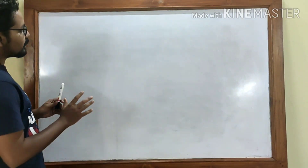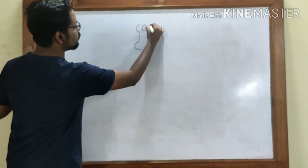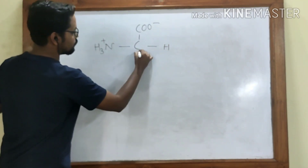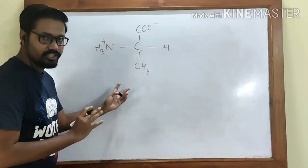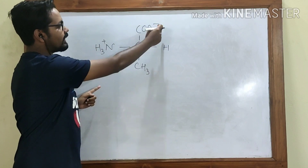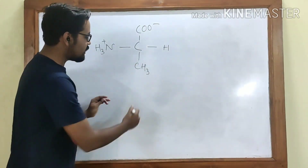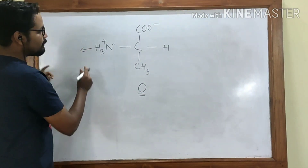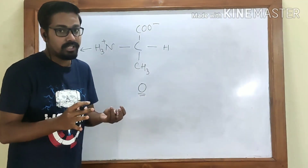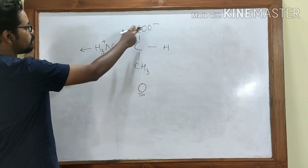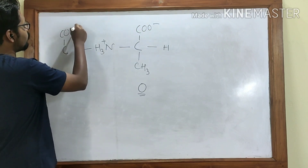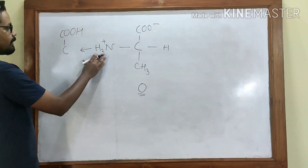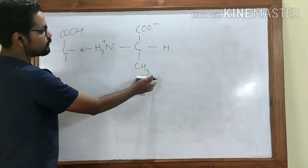To understand this, let's take the simple example of alanine. In its zwitterionic structure, one group is positive and one is negative, so they cancel each other out and the net charge is zero. Now, if I decrease the pH — meaning I put more hydrogen ions into the solution — the carboxyl group will become COOH because it accepts one proton, while the amino group stays as NH3+. So the net charge becomes plus one.